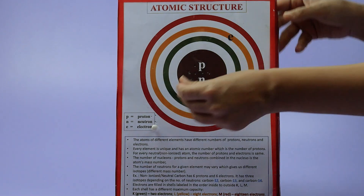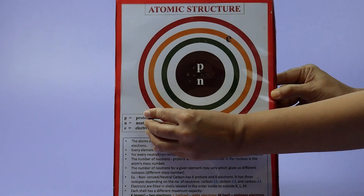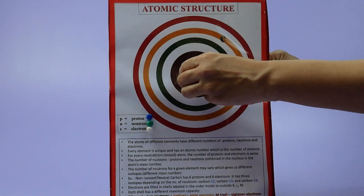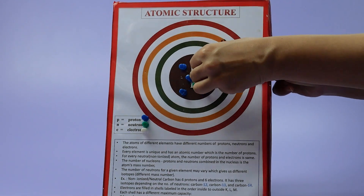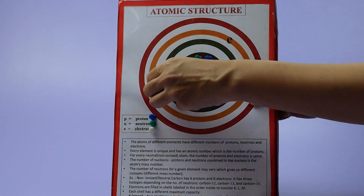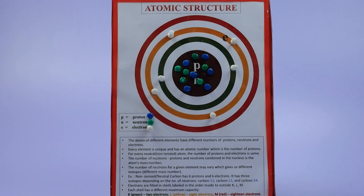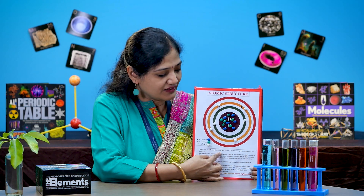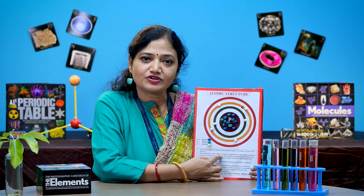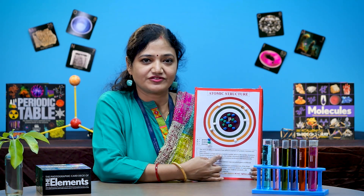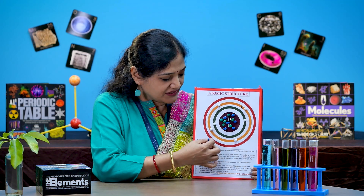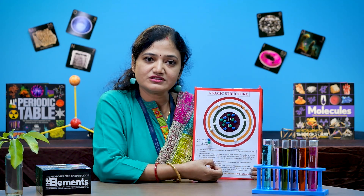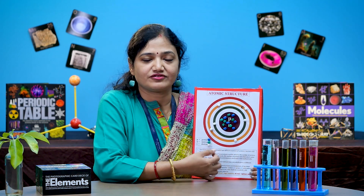Fix a particular color pin to denote protons, neutrons, and electrons. For example, here we are having a model of a carbon atom with six protons, six neutrons, and six electrons. The blue color pin shows the protons, the green shows the neutrons, and the white shows the electrons.